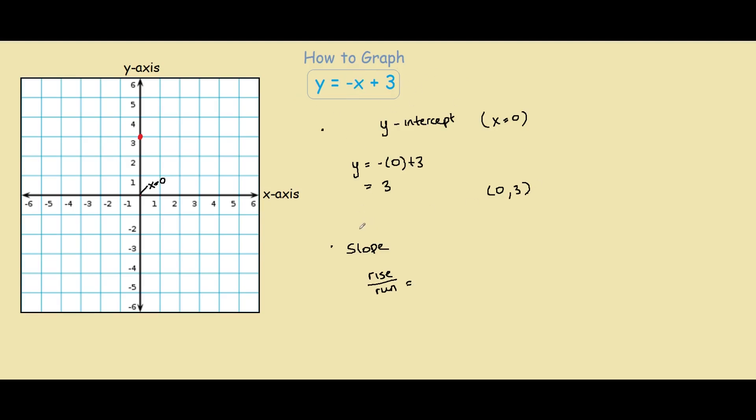Another way to write this equation is y equals negative 1x plus 3. The 1 you normally don't have to write because it's redundant. So our slope in this case is the number in front of the x, which is negative 1.